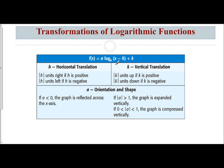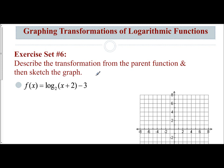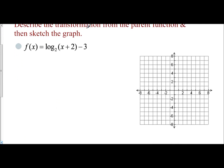So let's take a look at some examples. The first one: describe the transformation from the parent function and then sketch the graph of log base 2 of (x plus 2) minus 3. I'm going to look at the values of a, h, and k. a is your coefficient of the logarithm, so a is 1. h is attached to your x in the quantity — it's the opposite of what we see, so h is negative 2. And k is what you're adding or subtracting on the outside, which is negative 3. So h of negative 2 means I go left 2 units, and a k of negative 3 means I go down 3 units.